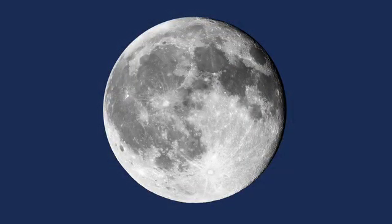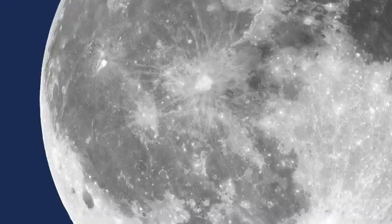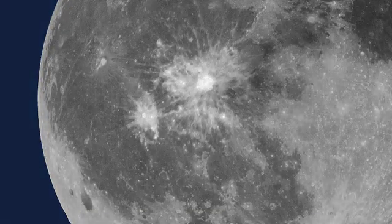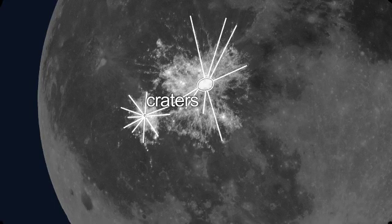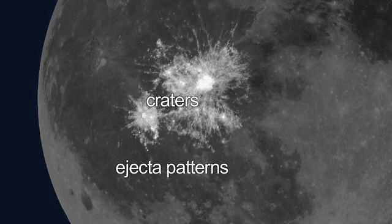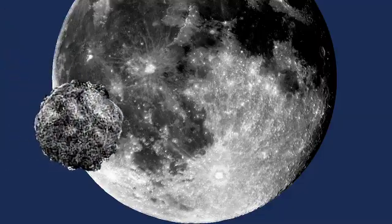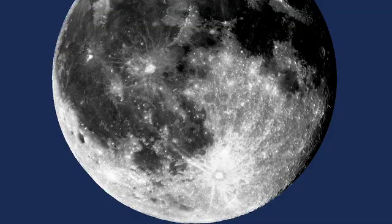Go outside tonight, take a look at the moon, and you'll see these circular features with lines coming out. Those circular features are craters, and the lines coming out are ejecta patterns — rays. The way those craters were formed were from rocks coming from outer space and smashing into the surface of the moon, pulverizing the soil there, what we call regolith, and spraying it out along those ejecta pattern rays.